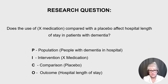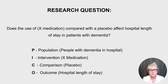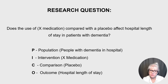Looking at an example quantitative clinical research question: 'Does the use of X medication compared with a placebo affect hospital length of stay in patients with dementia?' You might prefer to write it as 'In patients with dementia, does the use of X medication...' The PICO maps as: P — people with dementia in hospital; I — the medication; C — a placebo; O — hospital length of stay, or alternatively cognitive ability or decline. You could start with PICO and think about those key areas, or refine an existing research question using those four elements.